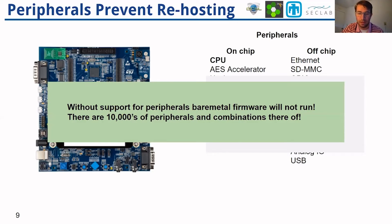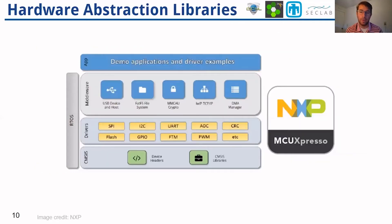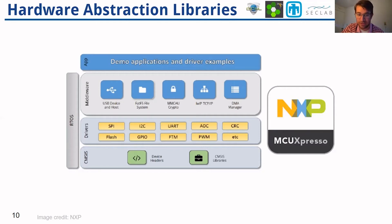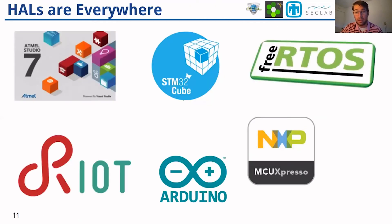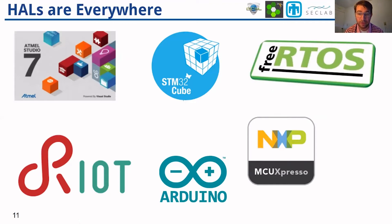So how can we scalably rehost firmware? If we look at the way developers develop their software, we get a clue. Developers and manufacturers of microcontrollers provide software development kits and hardware abstraction libraries to ease implementation. This includes device drivers that abstract away low-level details of buses and different peripherals. These hardware abstraction libraries are everywhere — NXP, STM, and ATML all provide SDKs and hardware abstraction libraries, which are also embedded in common operating systems like RIOT, Arduino, and FreeRTOS.